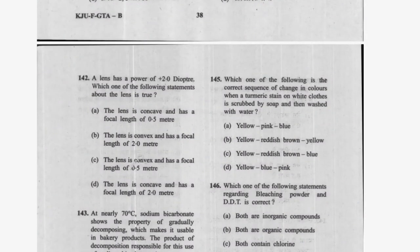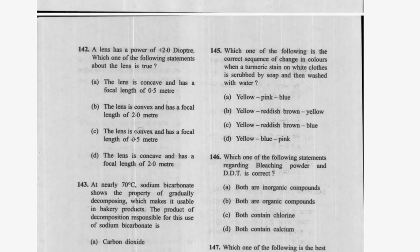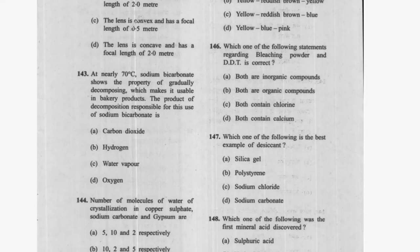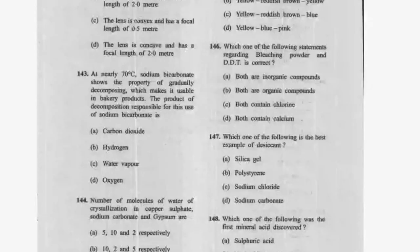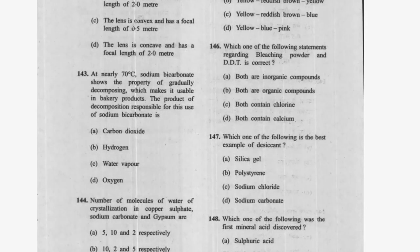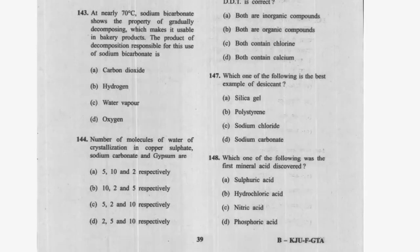Question 132: A lens has a power of +2 diopters — the lens is convex — option C is correct, with a focal length of 0.5 meter. Question 133: At nearly 70 degrees Celsius, sodium bicarbonate decomposes, producing carbon dioxide, which makes it useful in baking products — option A is correct. Question 134: Number of molecules of water of crystallization in copper sulphate, sodium carbonate, and gypsum are 5, 10, and 2 respectively — option A is correct.